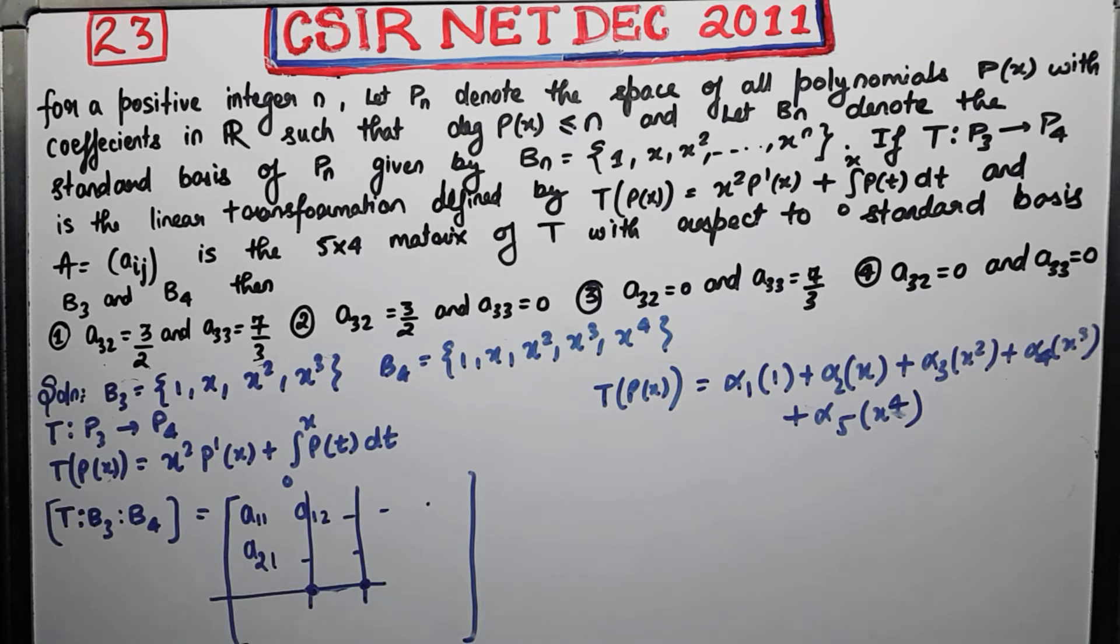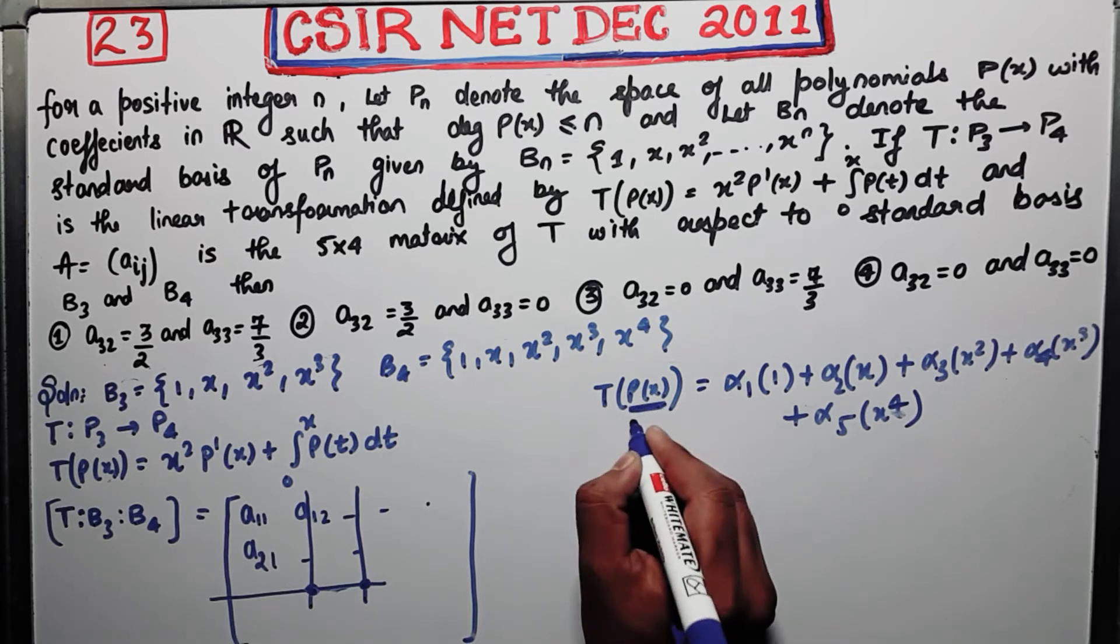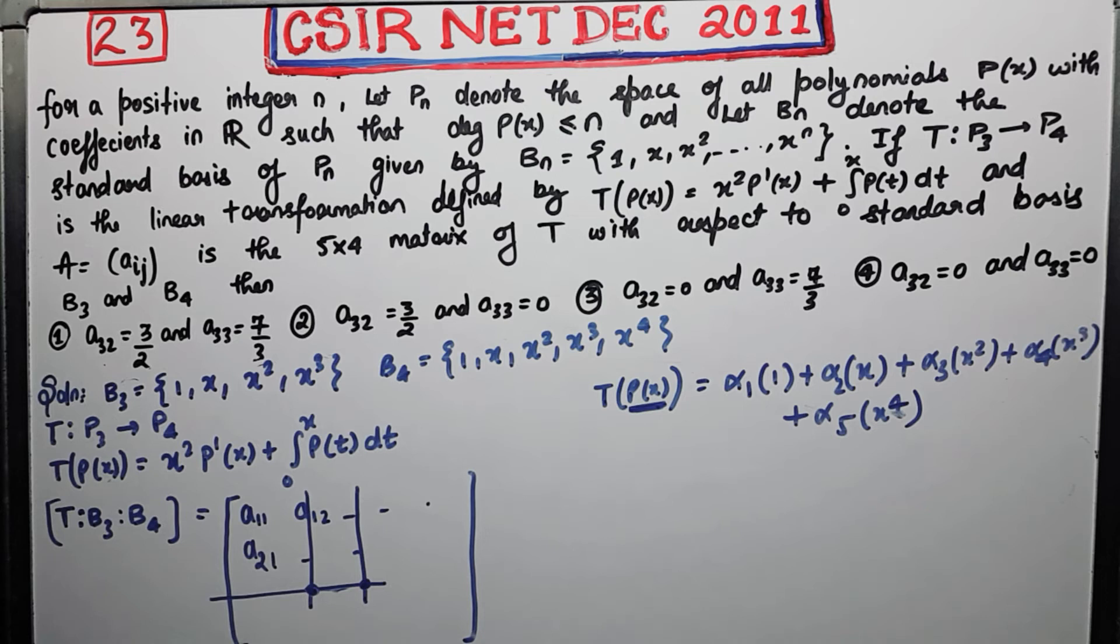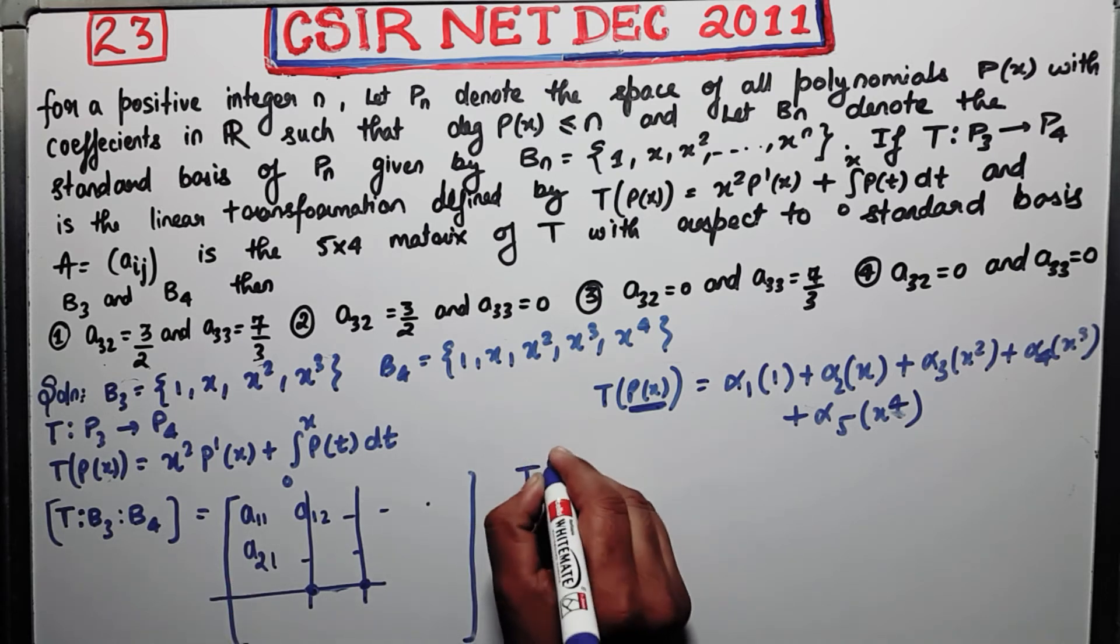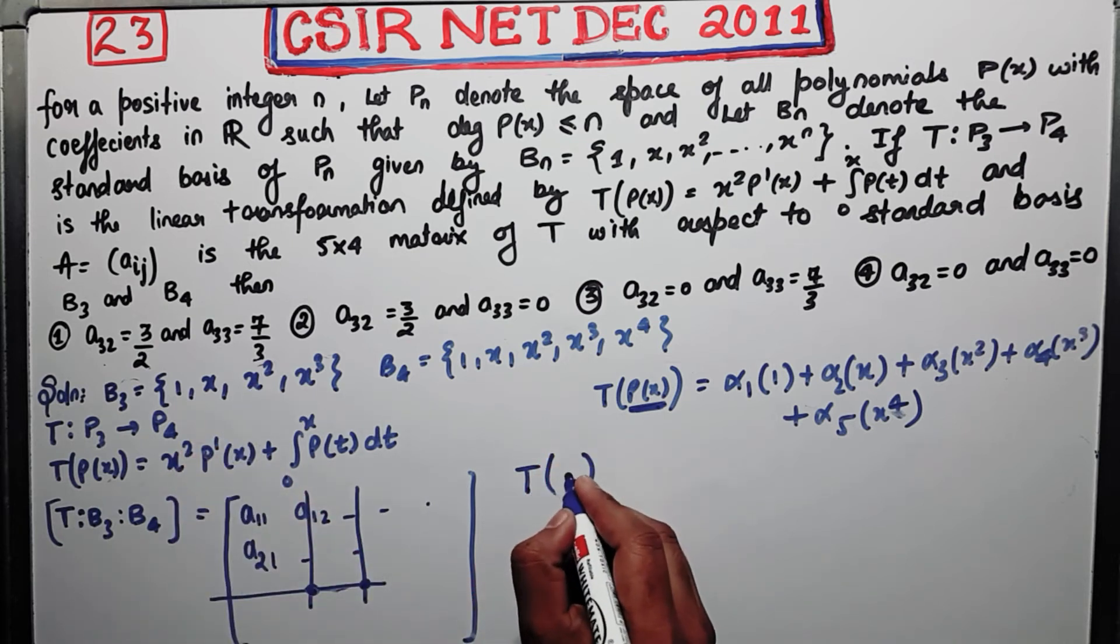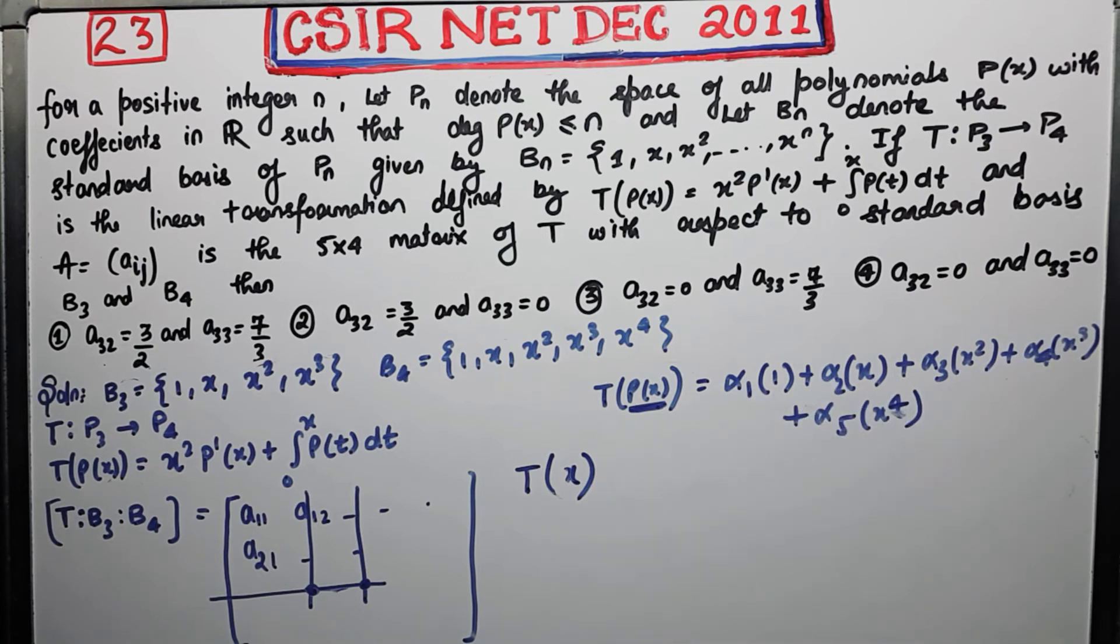So what do you know about the matrix of a transformation? If you replace this p(x) with the element from B_3, then after computing these coefficients you will get actually the column of that given matrix. That means if I replace p(x) with 1, where 1 is the element of B_3, then after computing α₁, α₂, α₃, α₄, and α₅, you will get your first column. If I replace this with x, then you will get your second column. So you need your second column because we need this element. In order to find this element, we need this second column.